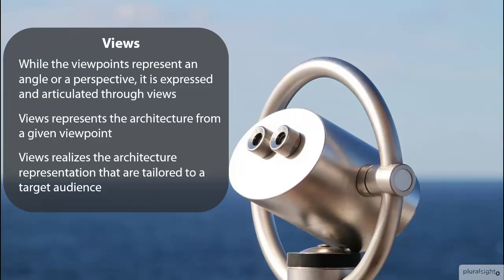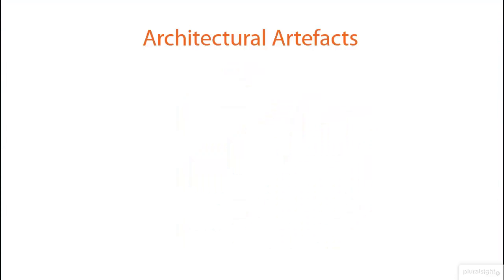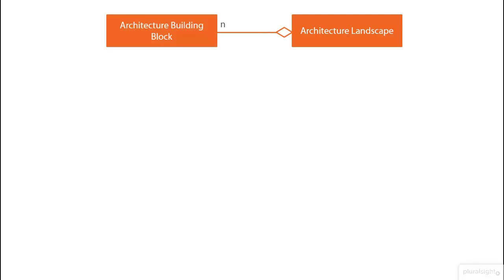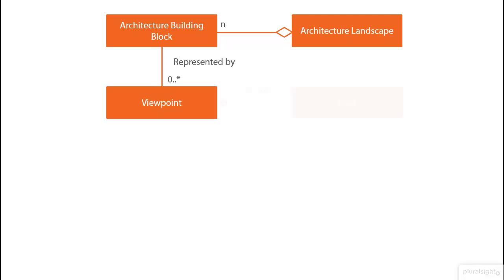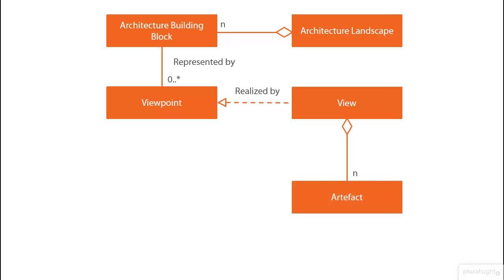Views are themselves constructed using a number of architectural artifacts, where an architectural artifact generally falls within the following categories: catalogs, matrices, or diagrams. These are usually further annotated with textual descriptions to aid in better understanding and to clarify or highlight certain aspects of the architecture. To clarify, as discussed earlier through the jigsaw puzzle analogy, the enterprise architecture landscape is built out using components referred to as architecture building blocks. A given building block may be represented to different stakeholders through viewpoints tailored to them. Viewpoints are articulated through views, which are essentially a collection of architectural artifacts — one of catalogs, matrices, or diagrams.